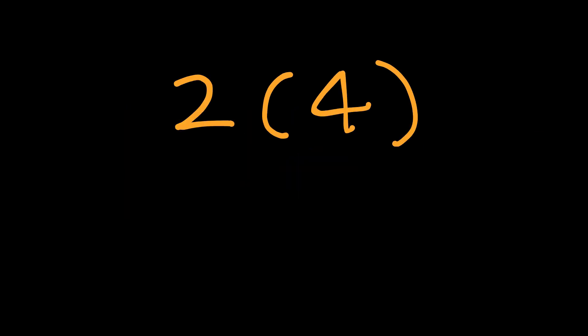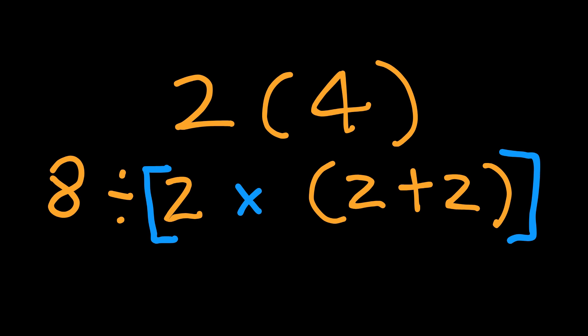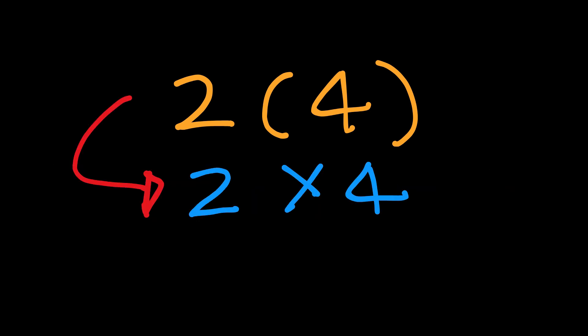The confusion usually comes from how the expression is written. A lot of people assume that the 2 parenthesis, 4 parenthesis, means it's grouped like parenthesis around 2 times 4. In other words, they mentally rewrite it as 8 divided open parenthesis 2 times open parenthesis 2 plus 2 close parenthesis close parenthesis. Which leads to 8 divided by 8 equal 1. But that is misread.